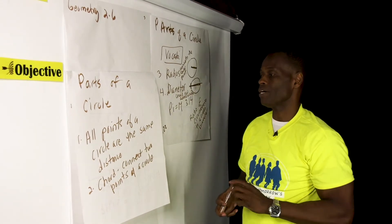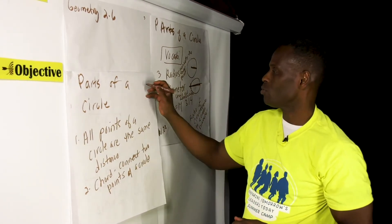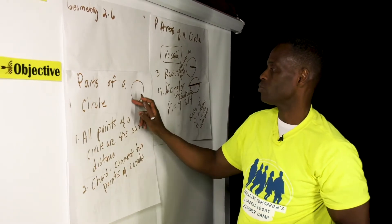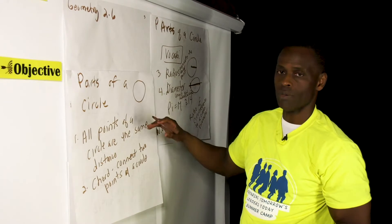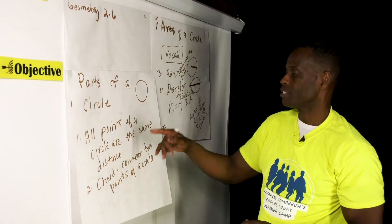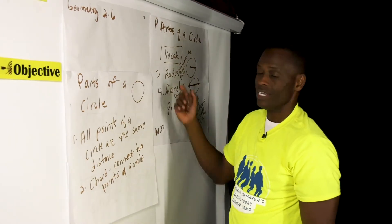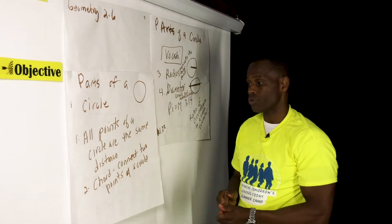It will be the same on a perfect circle. All points of a circle are the same distance apart. So from here to here or here to here, it's going to be the same distance in a perfect circle. So it's important that you understand that because when you think about a circle...